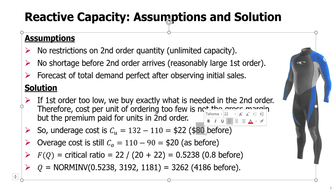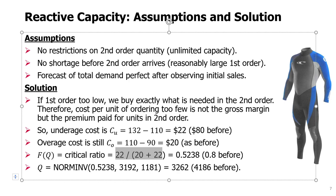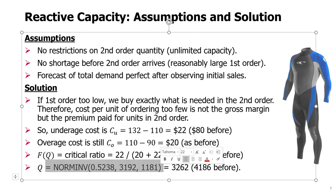Notice this is different than before — previously we had an $80 underage cost from lost sales, where every unit of lost sales meant a lost opportunity to make $80. Now, if we order too few units in the first order, the only cost is the premium we pay to order the missing units in the second order to cover total demand. The overage cost remains the same: leftover inventory costs $22 per unit. With the updated underage cost, we calculate a new critical ratio — much smaller at 0.52, compared to 0.80 before. Using the inverse normal CDF with our mean and standard deviation, the first order quantity Q is 3,262.